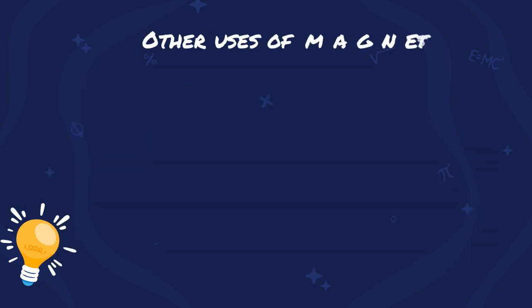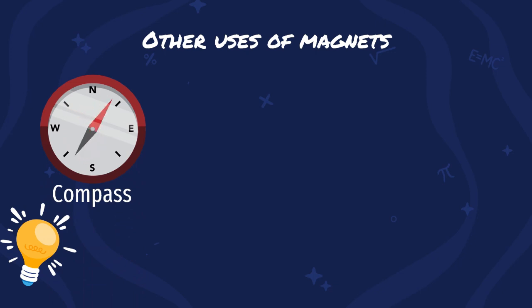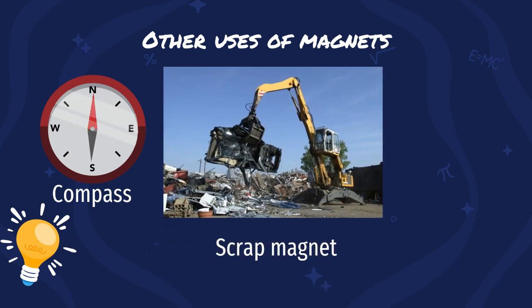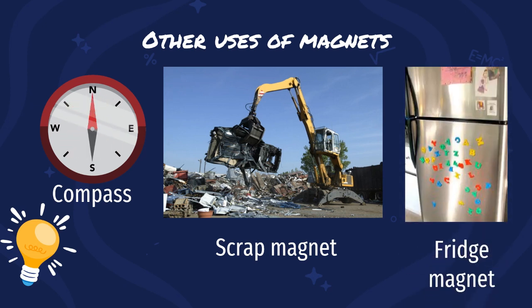Not only that, there are also a few other uses of magnets. In a compass, magnets are used to make sure that the needle always points to north. A scrap magnet is used for sorting out and transporting metal scraps in a junkyard. And this is a fridge magnet.